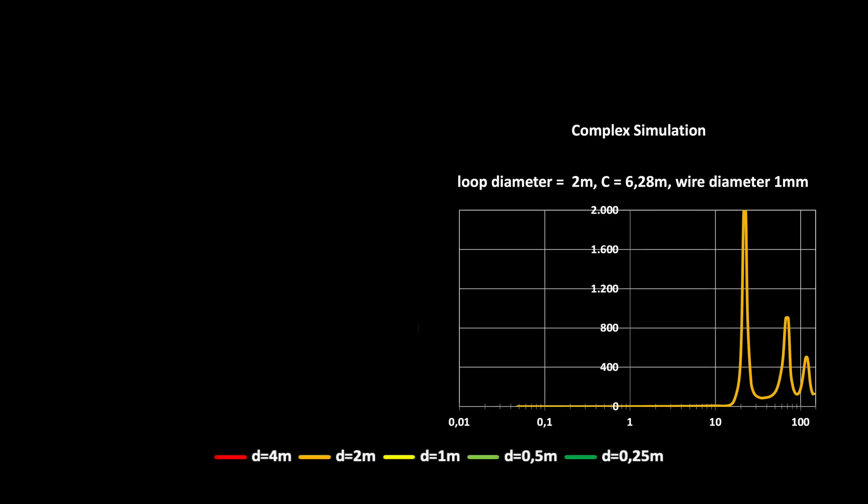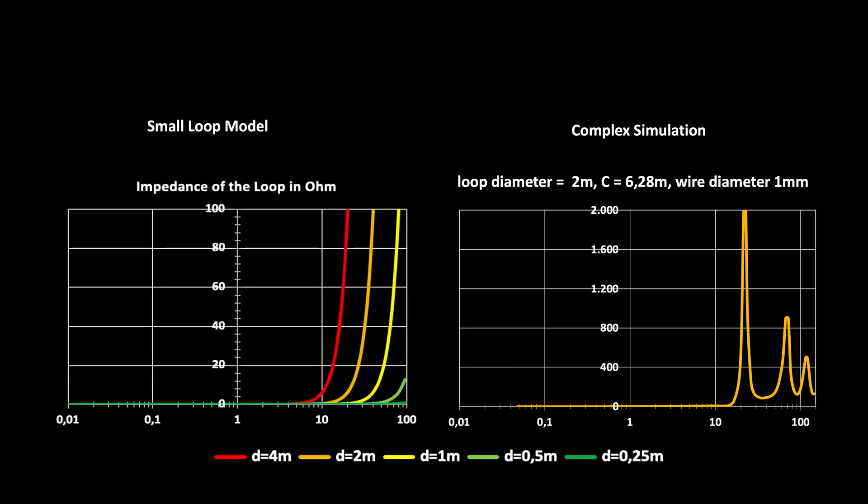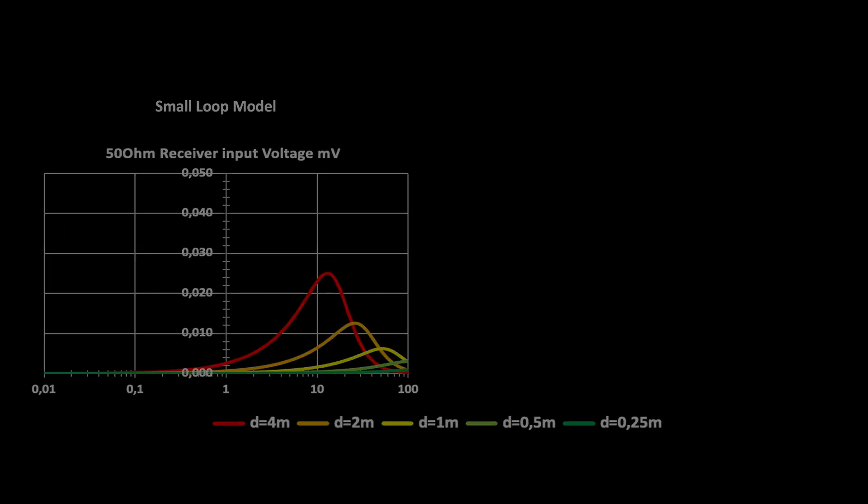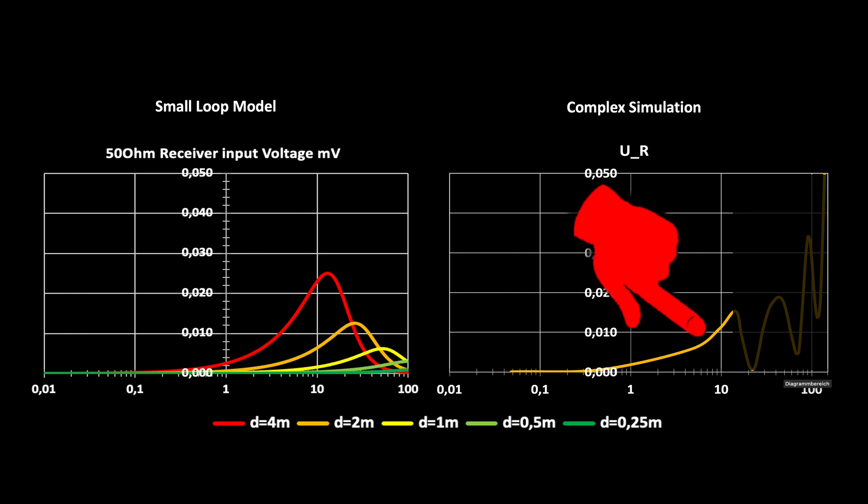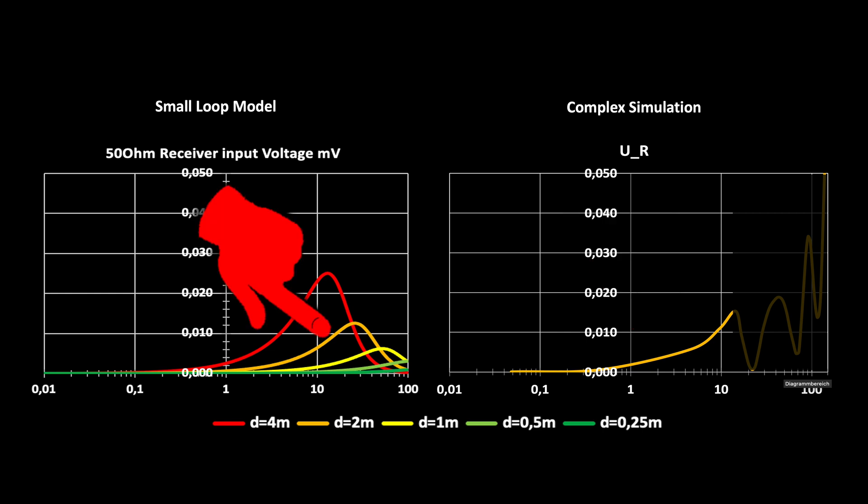Switching to a logarithmic frequency scale, we can compare the results to those presented in previous videos, where we computed the signal at a 50 ohm receiver input. From 0 to 20 MHz, the orange curve is almost identical for both the complex and simple calculation model. Ok, that's no surprise, otherwise it wouldn't be a good approximation.